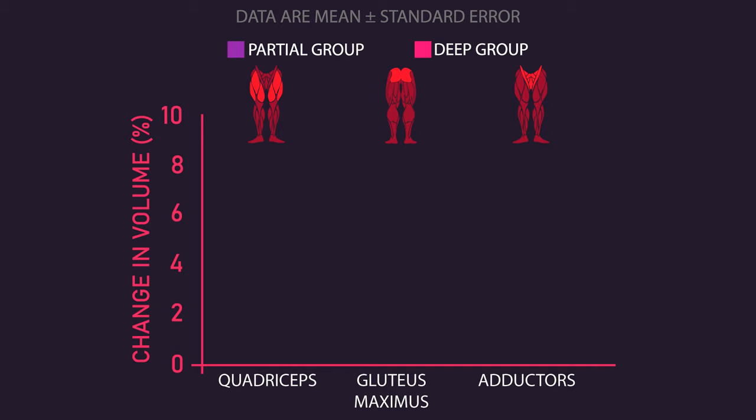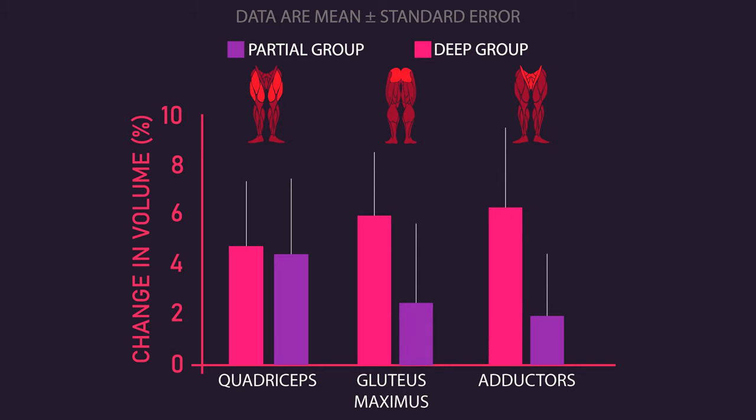After the study, quadriceps volume increased similarly in both groups, suggesting 90-degree squats may be a sufficient depth to optimize quadriceps growth. However, increases in adductors and gluteus maximus volume were significantly greater for the deep squat group, suggesting achieving deep squat depths is necessary to maximize growth of these two muscles.